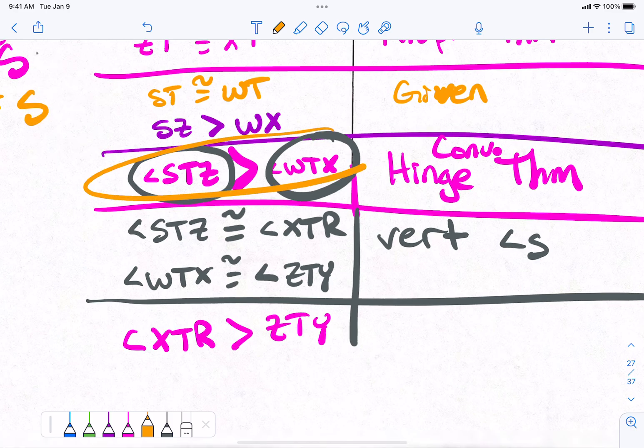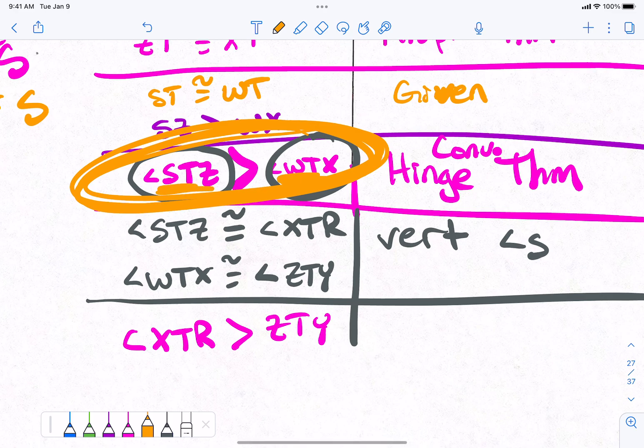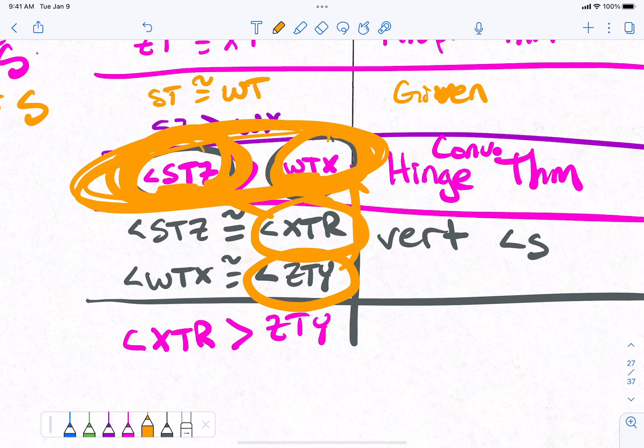We know from this step right here. Check it out. We know from this step right here that this guy is bigger than this guy. But this one goes in this spot right here, and this guy can go in this spot. So, XTR goes here, and ZTY goes here. Does that make sense? I can plop them into those spots because they're equal to these guys.